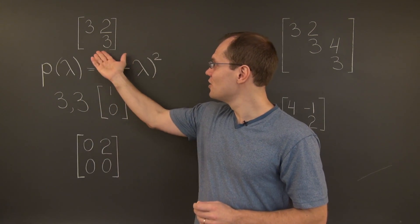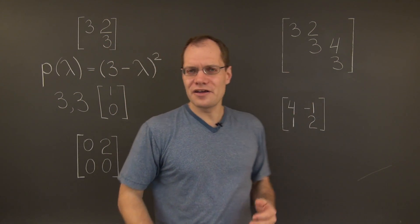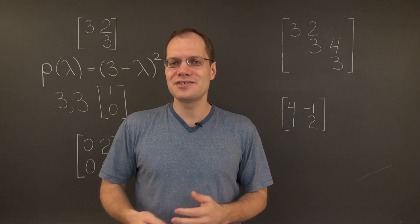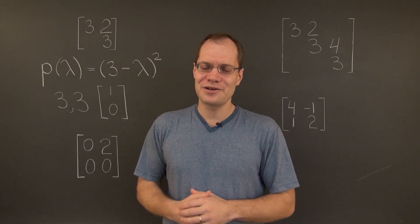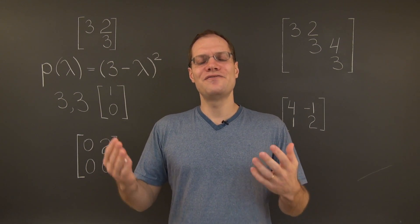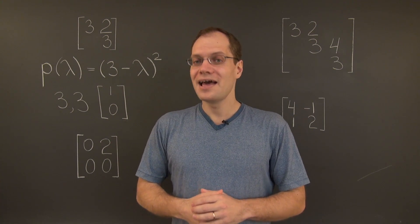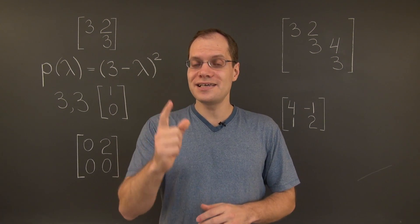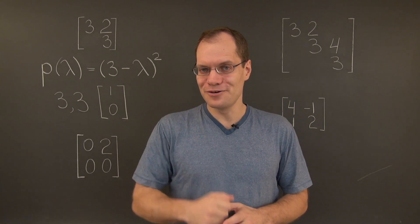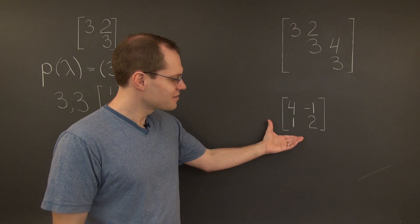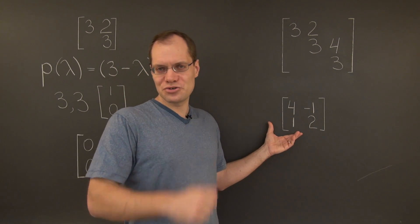Do defective matrices always look like this? Are they always upper-lower triangular matrices with two or more of the same value on the diagonal, and non-zero values on the off-diagonal? And the answer is, on the surface, yes. But deep down, no. On the surface, this matrix is also defective.